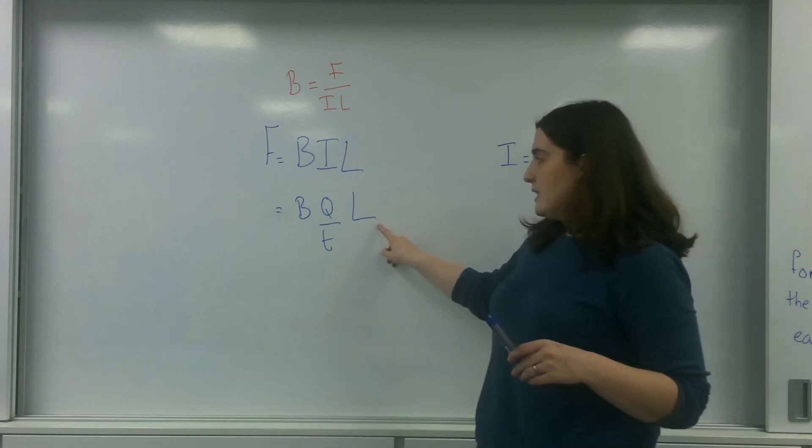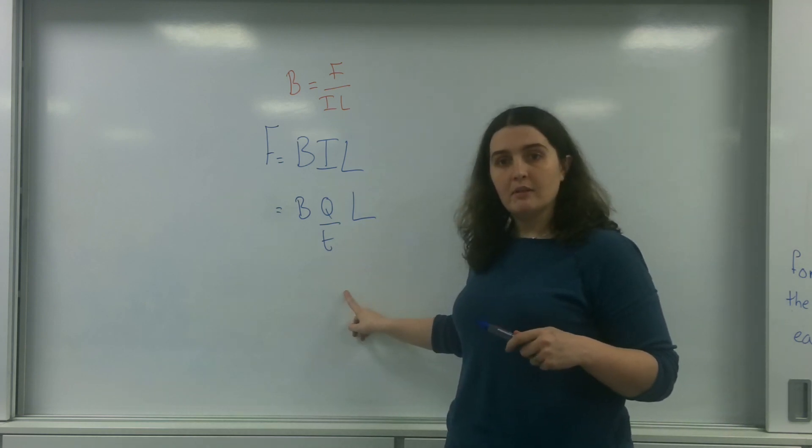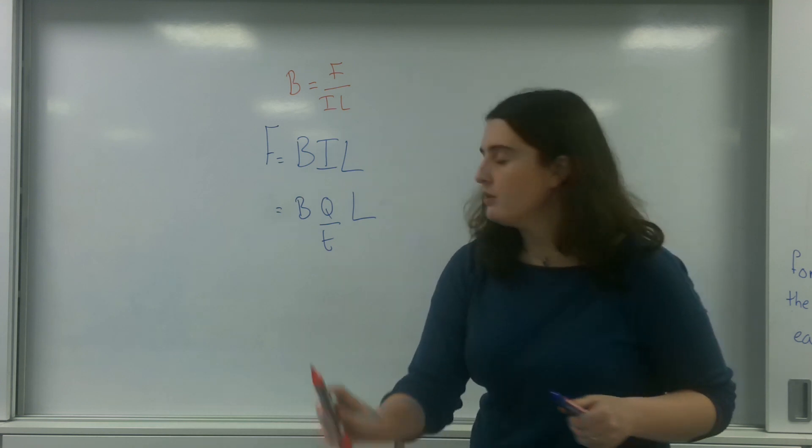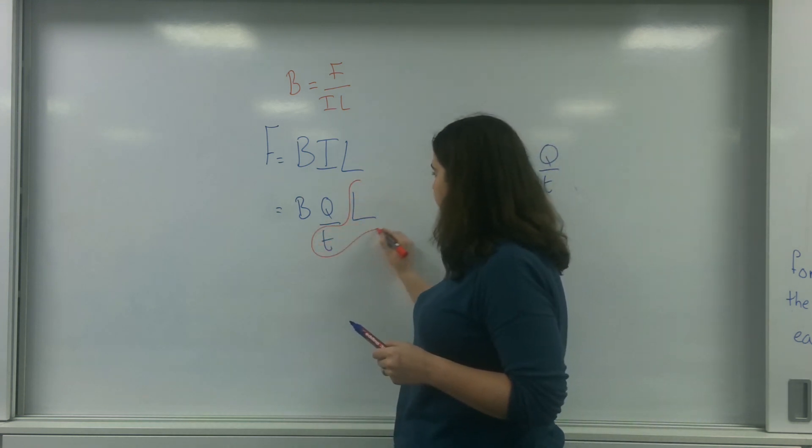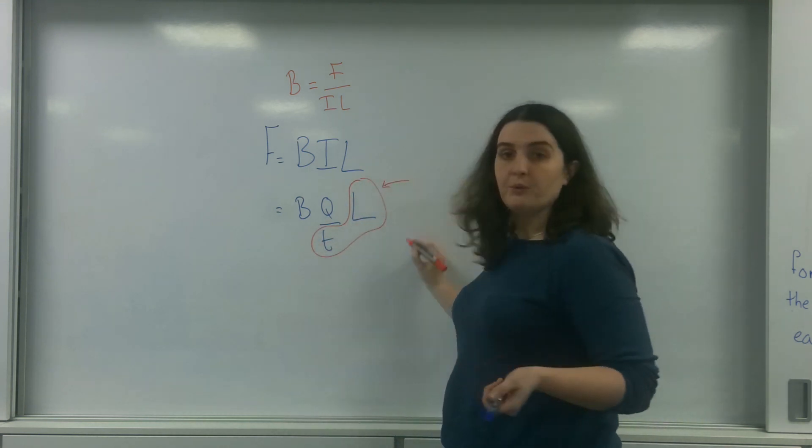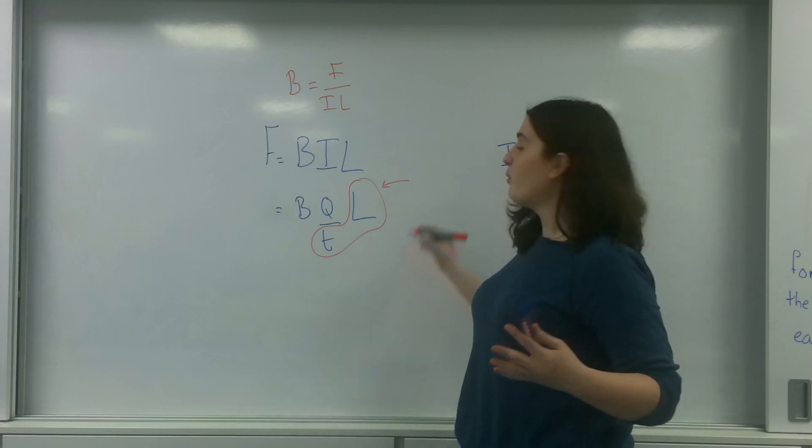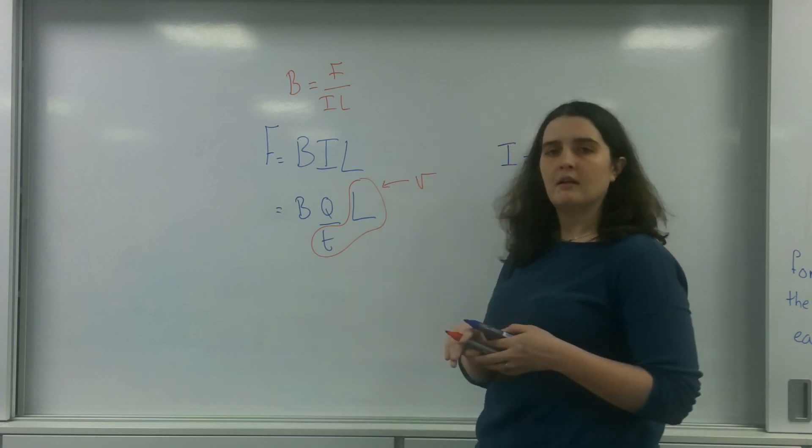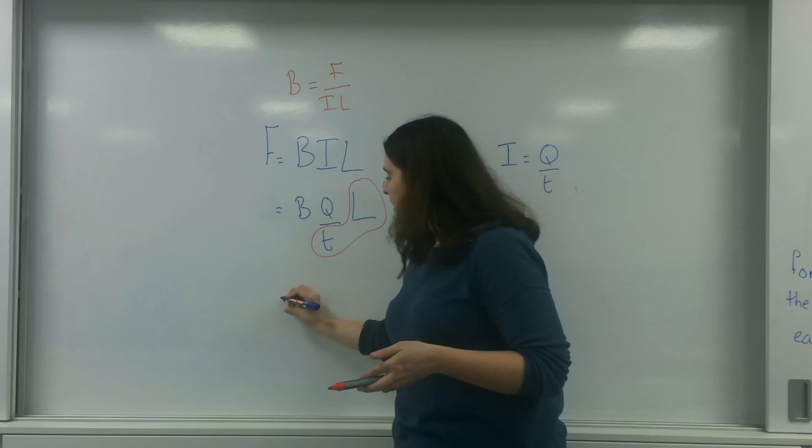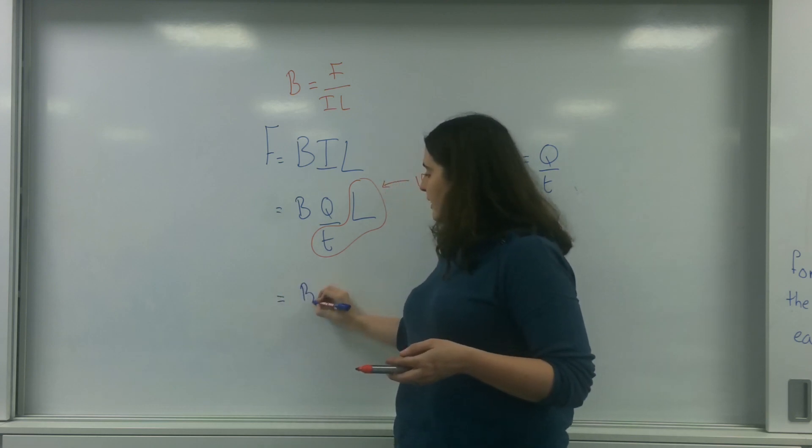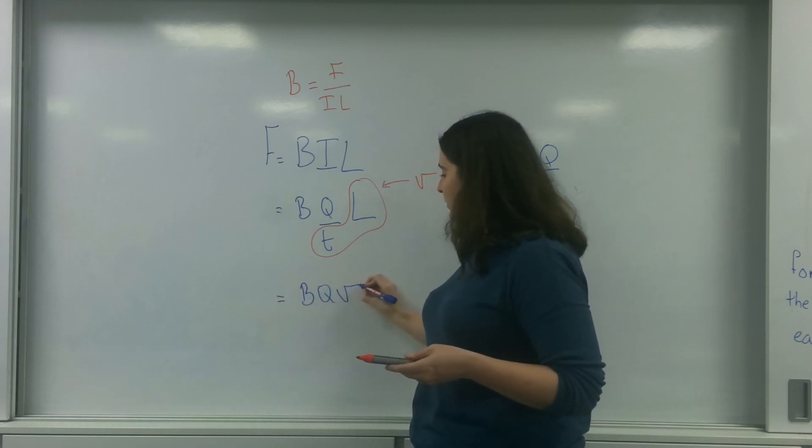Now I have a distance over a time. I've got a distance over my time here. That there, of course, distance divided by time is a speed or a velocity, which means my formula is B, Q, V.